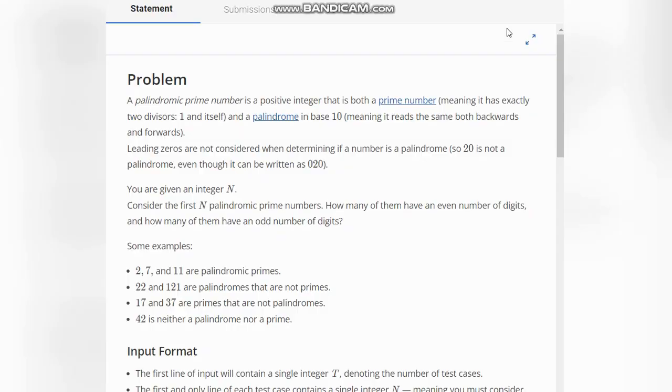Hello everyone, welcome back to the channel. Here we are discussing the question 'Palindromic Prime Numbers' on CodeChips. The problem states that a palindromic prime number is a positive integer that is both a prime number, meaning it has exactly two divisors (one and itself), and a palindrome in base 10, meaning it reads the same both